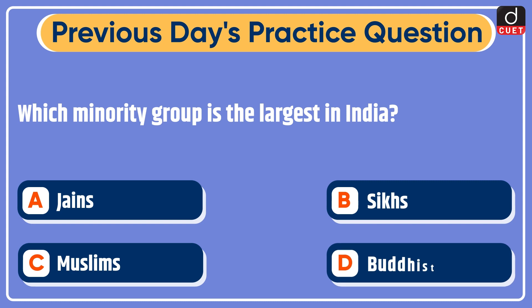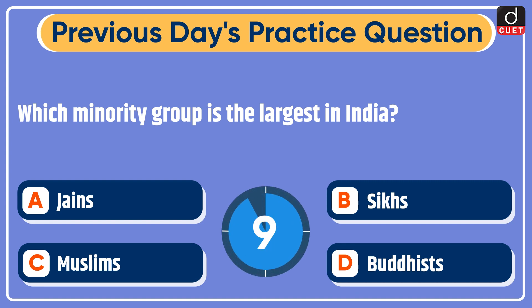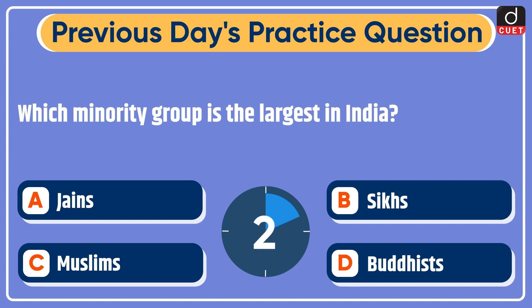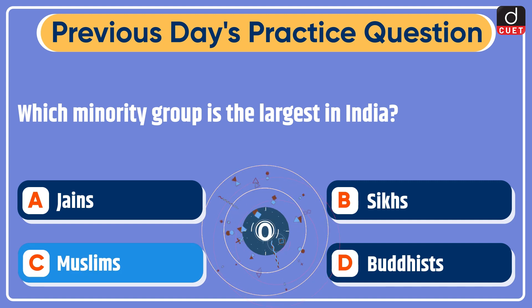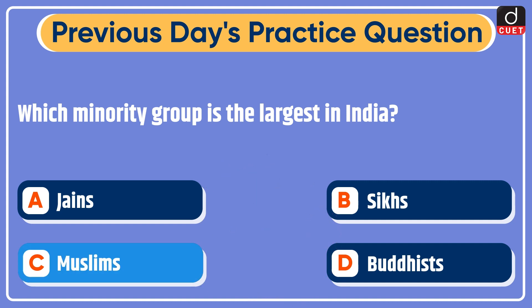Question was: which minority group is the largest in India? Options: Jains, Sikhs, Muslims, or Buddhists? The correct answer is option C, Muslims.